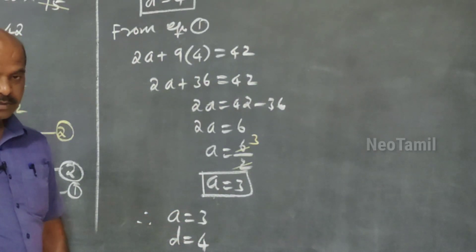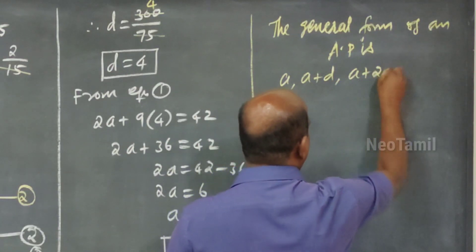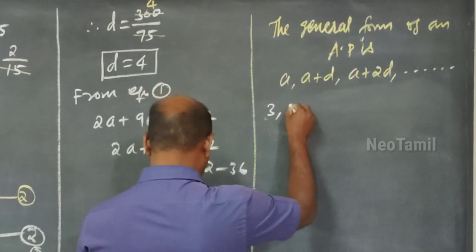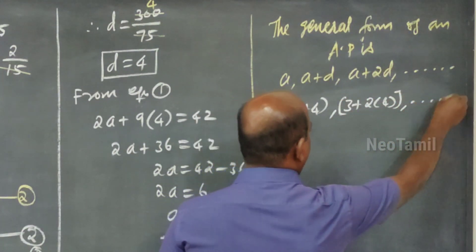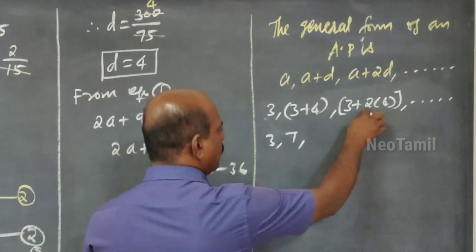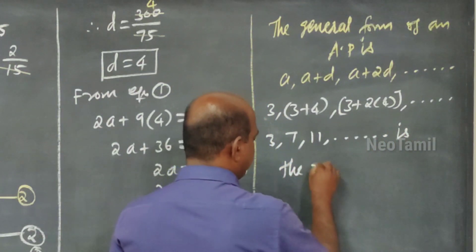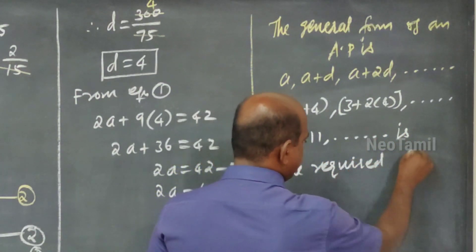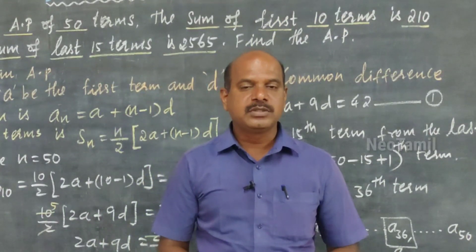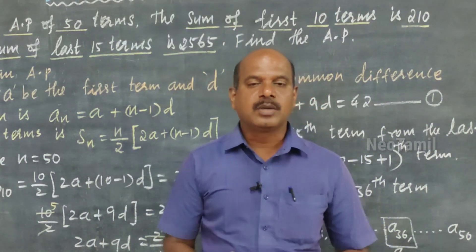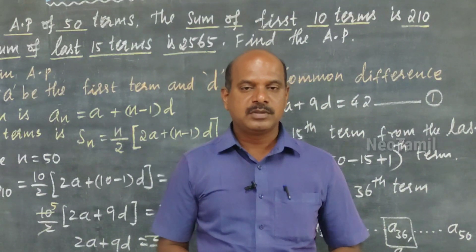The general form of an AP is: a, a+d, a+2d, and so on. With a = 3 and d = 4: 3, 3+4, 3+2(4), ... which gives 3, 7, 11, ... and so on. This is the required arithmetic progression. The question is completed. I hope you understood the question clearly. Comment your doubts in the comment box, like and share this video. I will meet you in another video with a different concept. Thanks for watching.